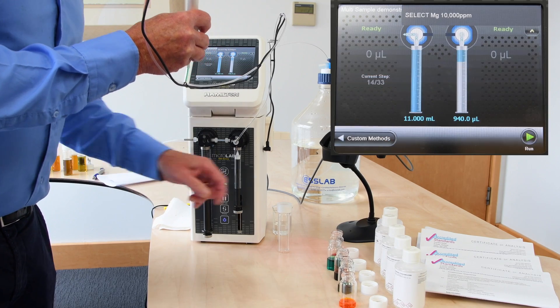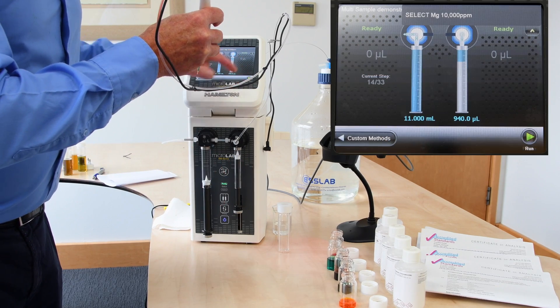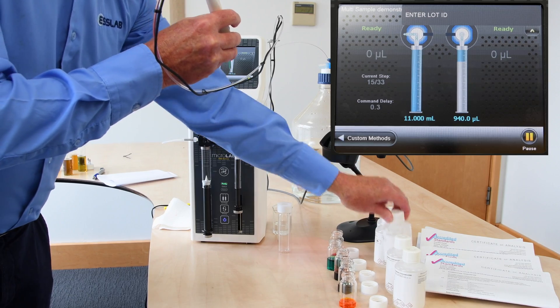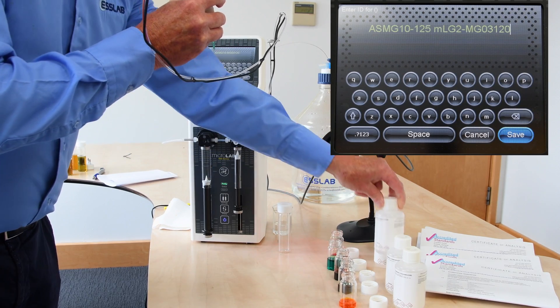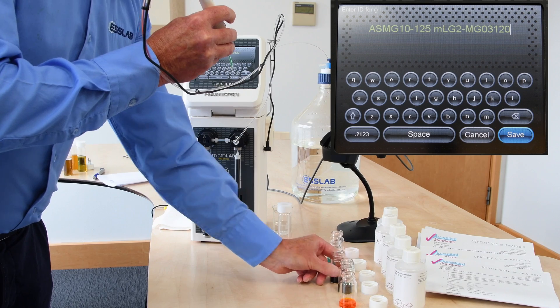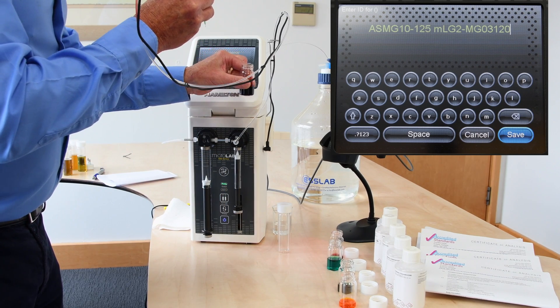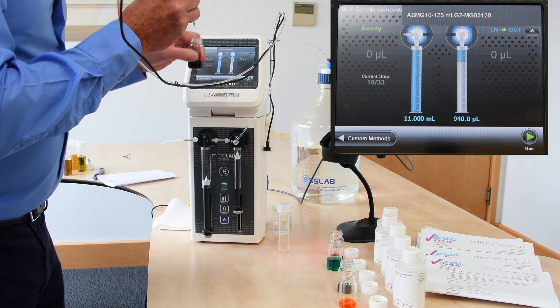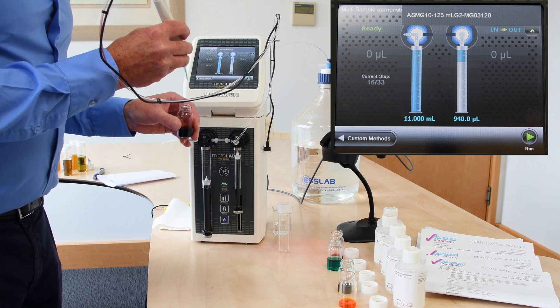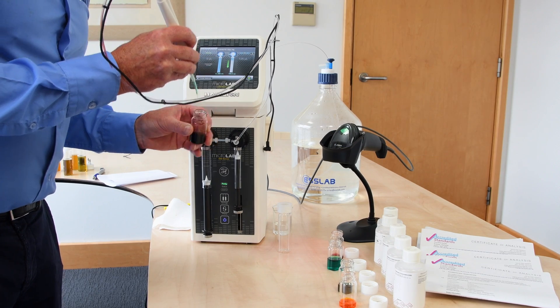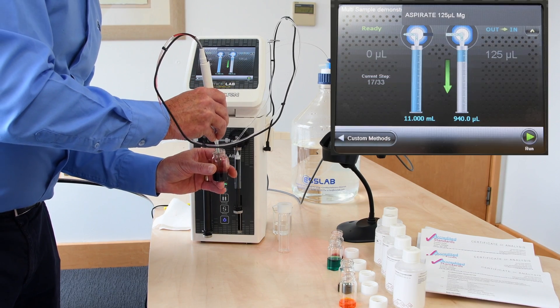Next step was the magnesium. So we can actually look at that, enter in the lot ID. It's confirmed. Save that. Confirming that on the display. Press acknowledge, and now it's asking me to aspirate the next volume, 125 microliters.